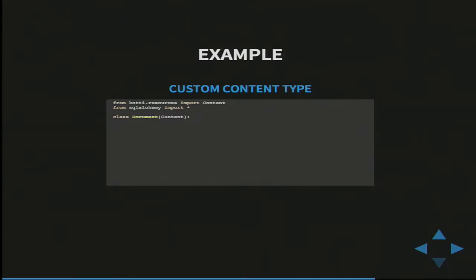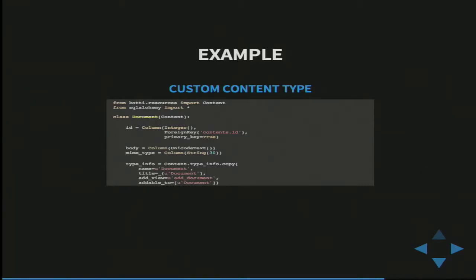The custom content type looks similar to this. It inherits from COTI's content class, which is the default you should probably inherit all your types from. It has a primary and foreign key to the parent's table ID column — needed for the join table inheritance of SQLAlchemy — and then adds the attributes provided by this class in addition to the inherited ones. Finally, there's a type_info that tells COTI how, where, and under which conditions that content type should be made available through the user interface.